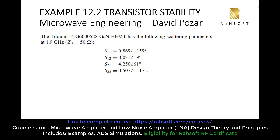There is a transistor and this transistor has the following scattering parameters: S11, S12, S21, and S22 at the frequency of 1.9 GHz. The characteristic impedance of our network is Z0 = 50 ohms.